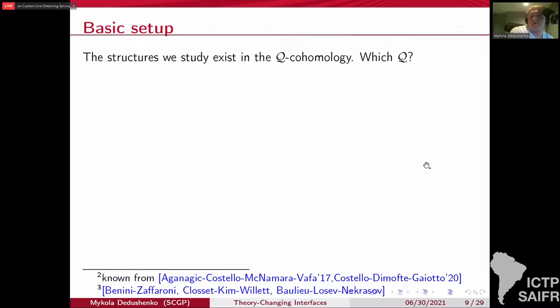Now, what supercharges are we looking at? It is most convenient to describe it in the 2D (2,2) language. It is probably the most familiar to everyone. So recall that there are four interesting supercharges in this case. The B-model supercharge and the holomorphic supercharge. Once you lift them to three dimensions, they both become the supercharge of the holomorphic topological twist, in particular known from these papers and most recent Costello-di Mosto-Gaiotto.